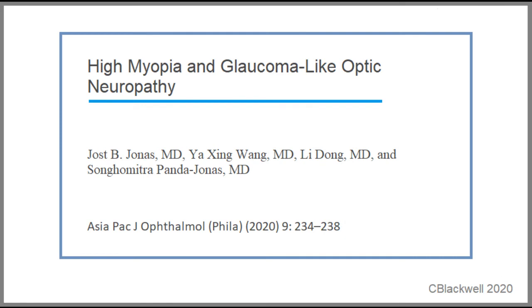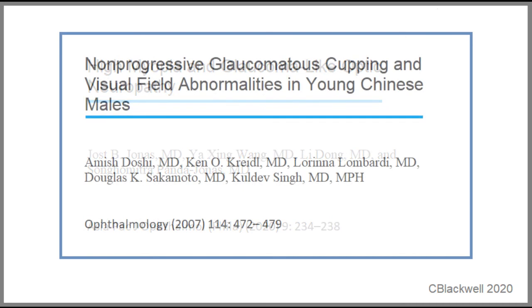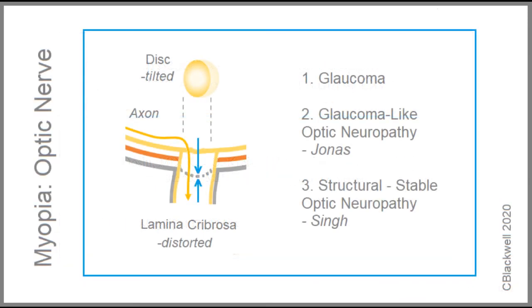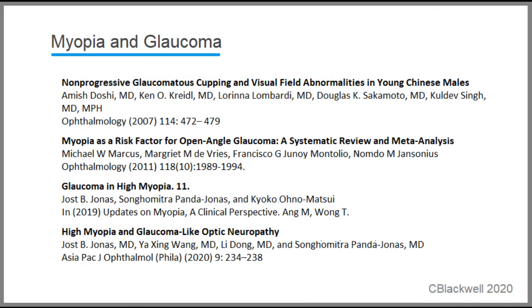Dr. Jonas proposes this is a glaucoma-like optic neuropathy. Dr. Singh discusses another myopia variant, suggesting nerve damage may be a result of internal stress within the tilted nerve head, and he has followed a number of patients where their findings have remained stable. So it looks like we have the following options for myopia and glaucoma: standard glaucoma, glaucoma-like optic neuropathy, and a structural but stable optic neuropathy.